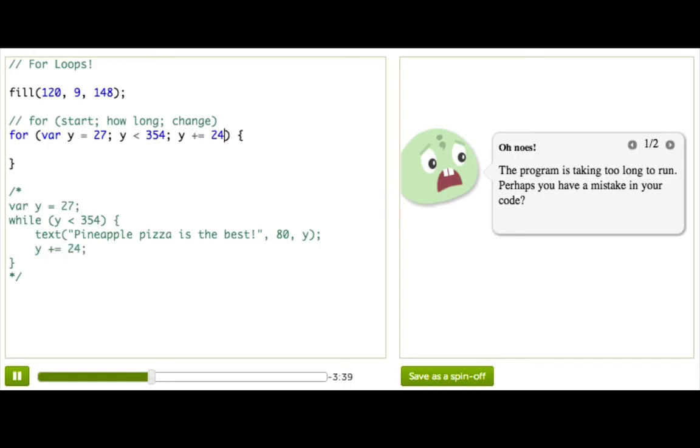And these three parts always have to occur in this order in your for loop. You always have to start out by saying this is where this variable should start out as, here it's 27. Then you need to say how long you want to keep going for, so repeat as long as it's less than 354.